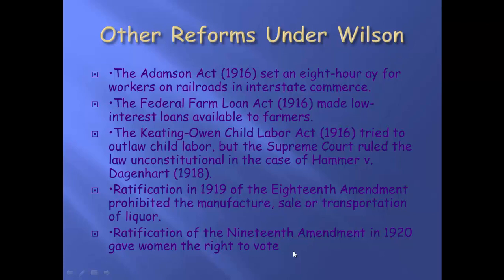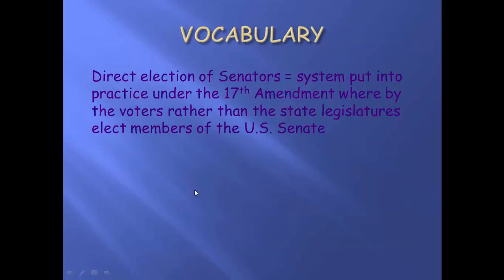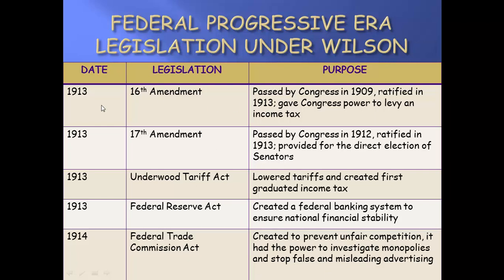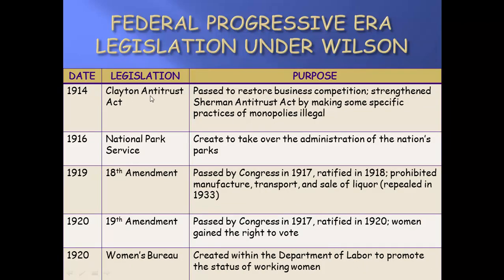So you have some serious reforms with Teddy, Taft, and Woodrow Wilson. Let's look at the laws under Wilson — there are a lot of them. The 16th Amendment is the income tax. The 17th Amendment: we directly elect our senators. The Underwood Tariff lowers the tariff. The Federal Reserve Act creates the Federal Reserve Board to keep an eye on interest rates and the money supply. The FTC makes sure businesses are doing what they're supposed to do. The Clayton Antitrust Act gave the Sherman Antitrust Act more power. The National Park Service was created to take over the administration of all the nation's parks to make sure they're still there today like they were 100 years ago.